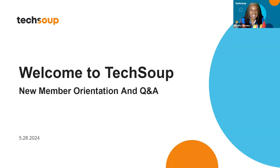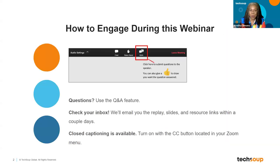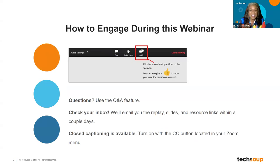Welcome to TechSoup's new member orientation. You can type your questions in the Q&A throughout the presentation. We will email you the slides and the video replay within 48 hours, probably tomorrow. For closed captions, tap the CC button at the bottom of your Zoom screen. When you close your screen, there will be a survey — just three quick questions to help us serve you better at TechSoup.